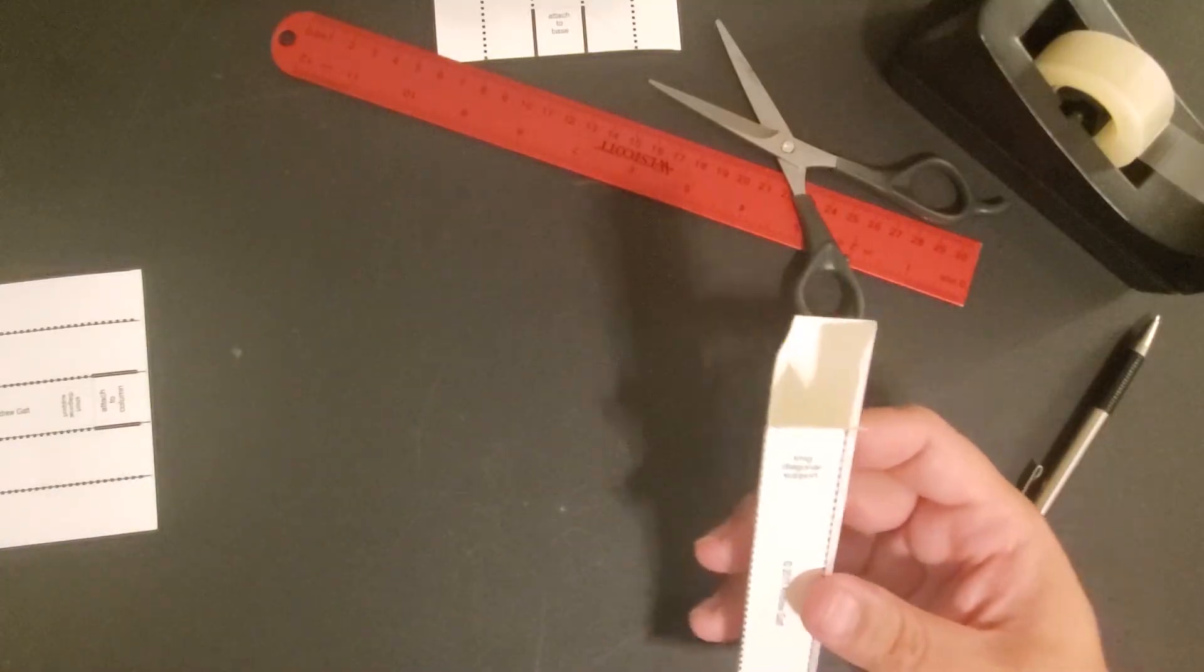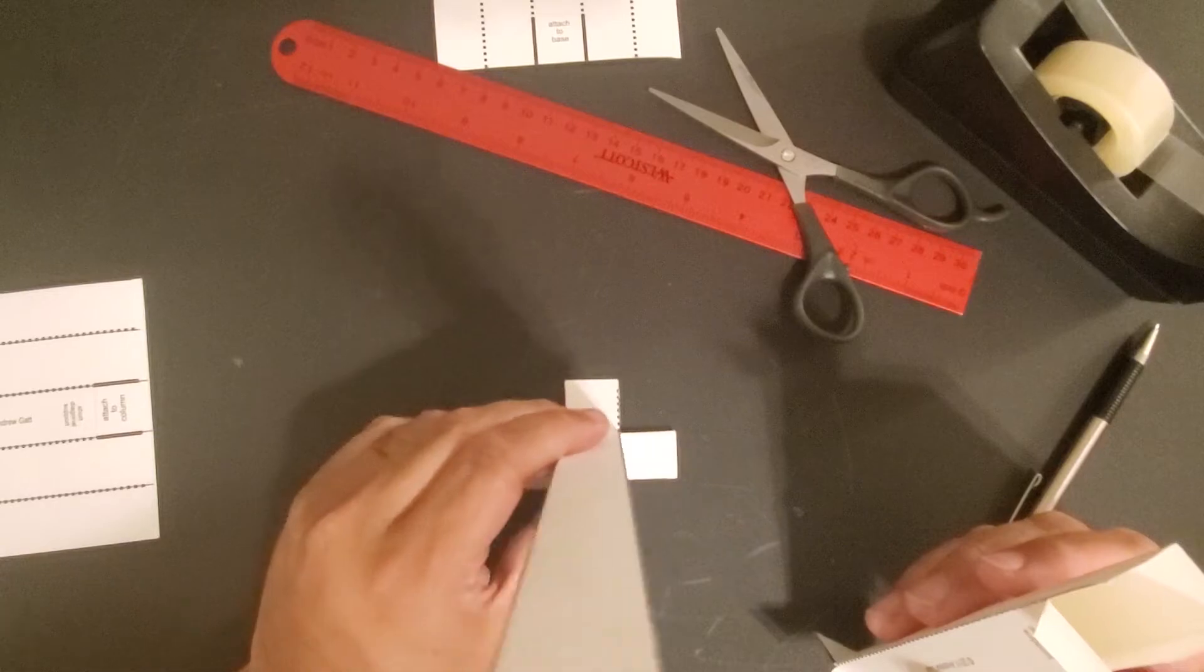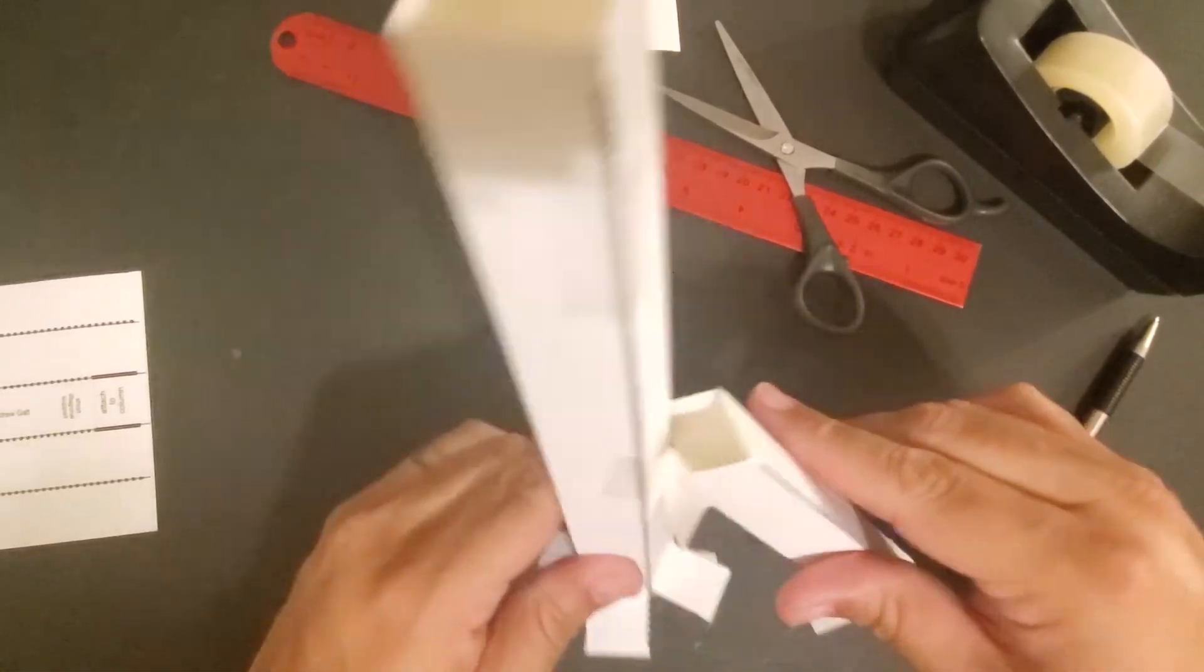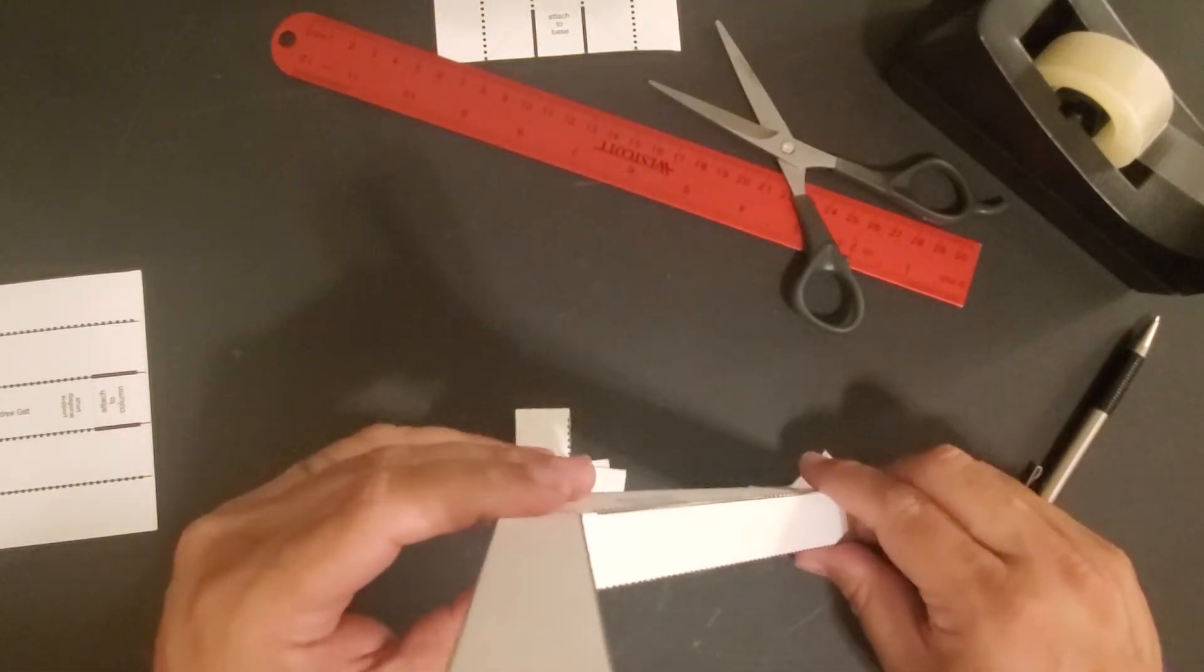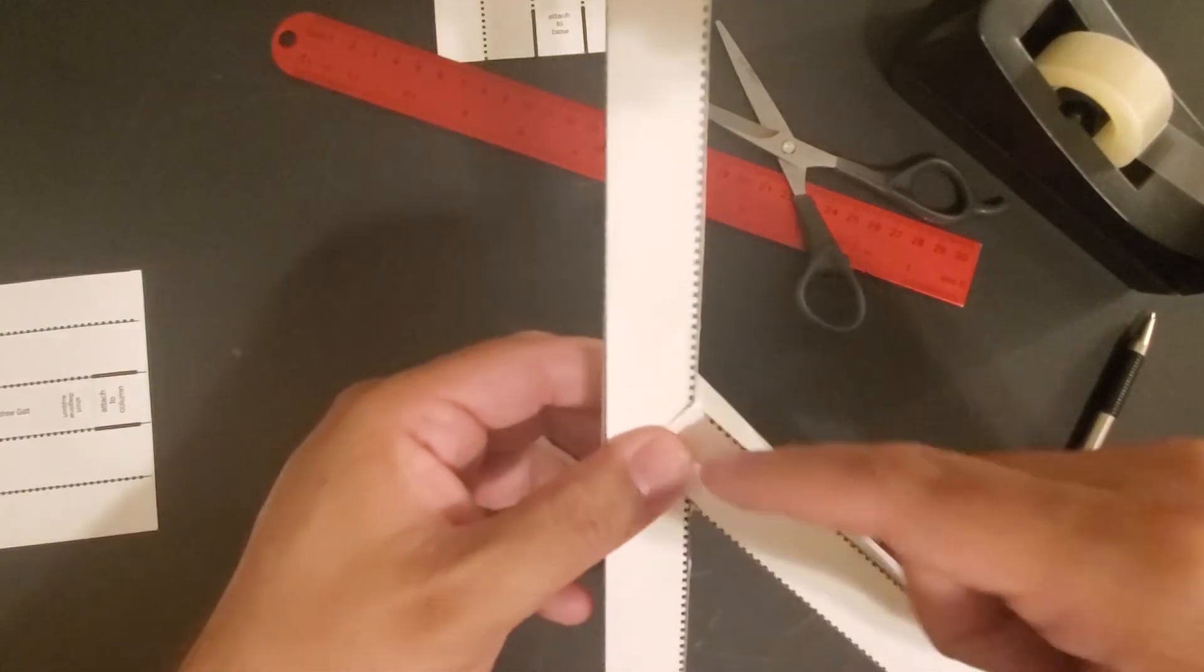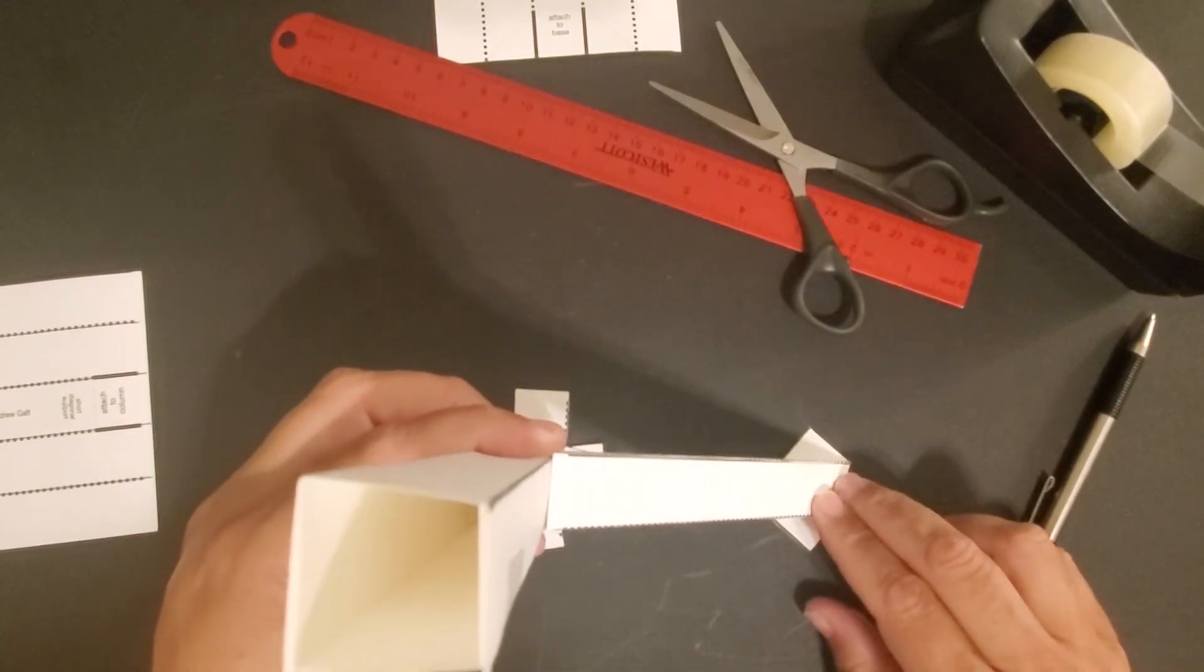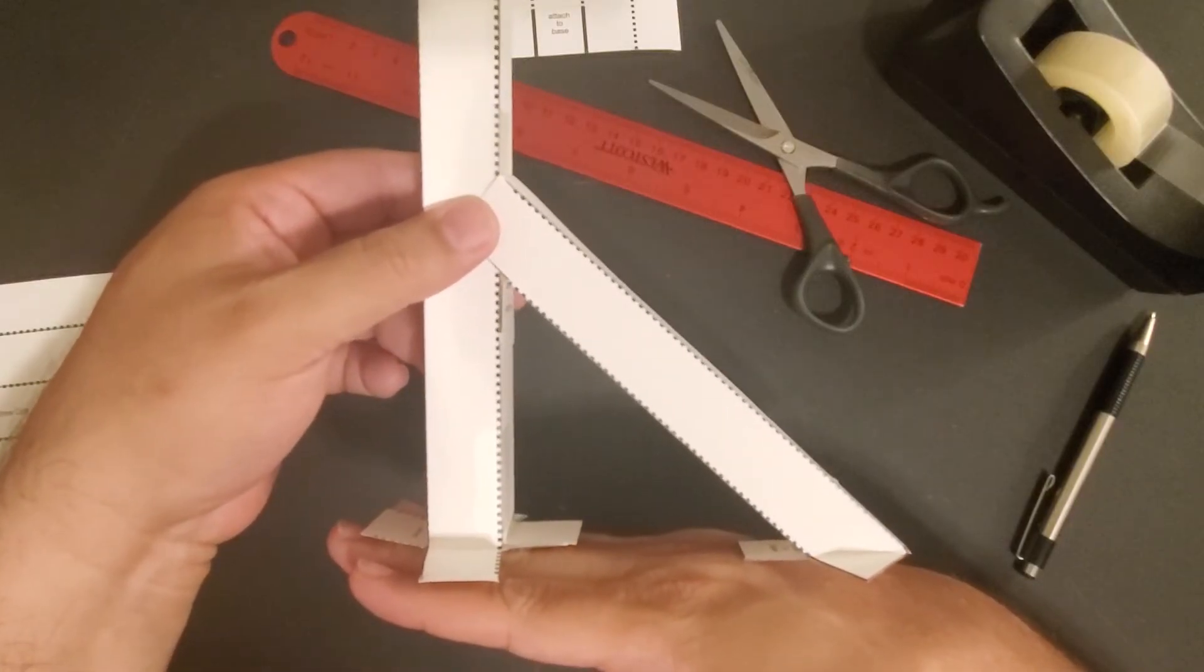So the way this will get attached is that I have my column that's attached. This is going to get attached to the column and then the other side to the base. And so I would attach the one side to the column, tape that down on both sides, and then attach the other side to the base. And that's going to help give it some additional structural integrity.